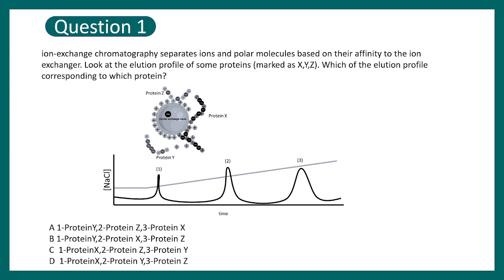I'm going to pause for a moment so that you can read this question. This question says ion exchange chromatography separates ions and polar molecules based on their affinity to the ion exchanger. Look at the elution profile of some proteins marked as X, Y, and Z. Which of the elution profile corresponds to which protein?